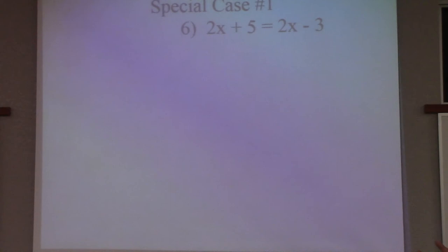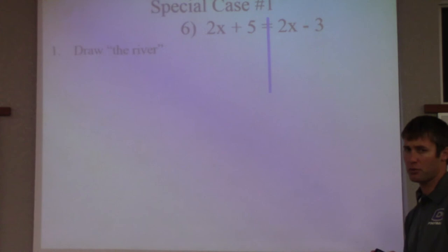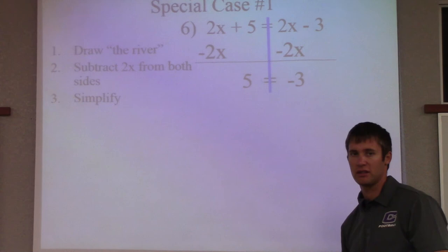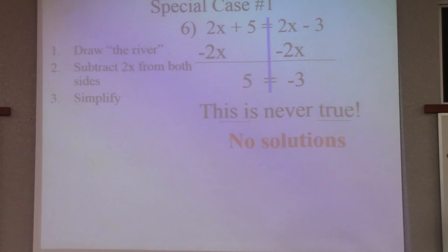Let's go through a special case. There's two types of cases that you're going to get. So I'll draw the river. Now if you look at it, I'll have 2x and 2x. They're the same, so we're going to subtract it. When you subtract, they both cancel. 2x minus 2x cancels. 2x minus 2x cancels. And so I have 5 equals negative 3. Does 5 equal negative 3? No, it doesn't. So this is a special case in which you have no solution. Nothing works. There is no x value. So it's never true, there is no solution.